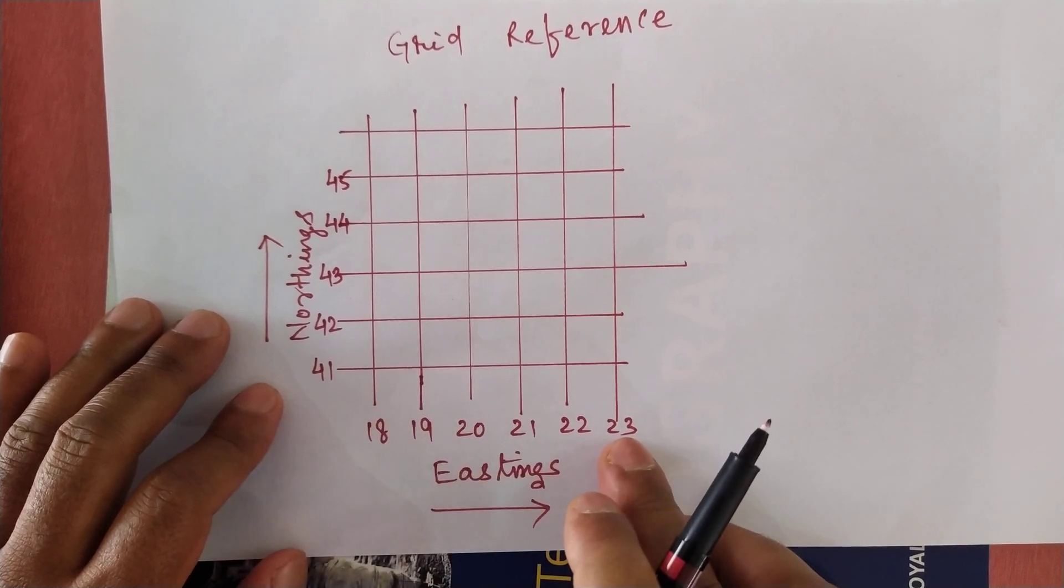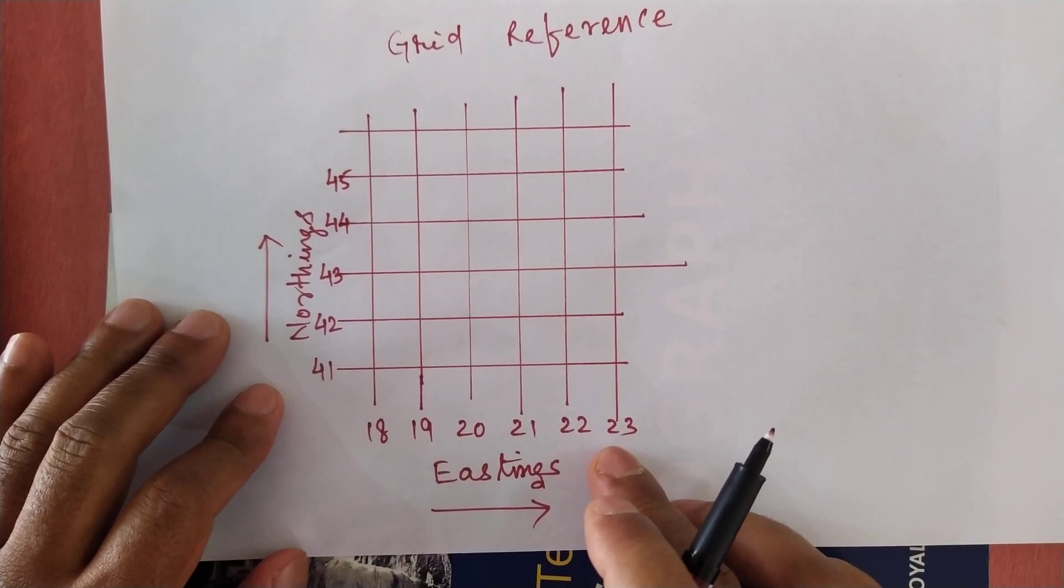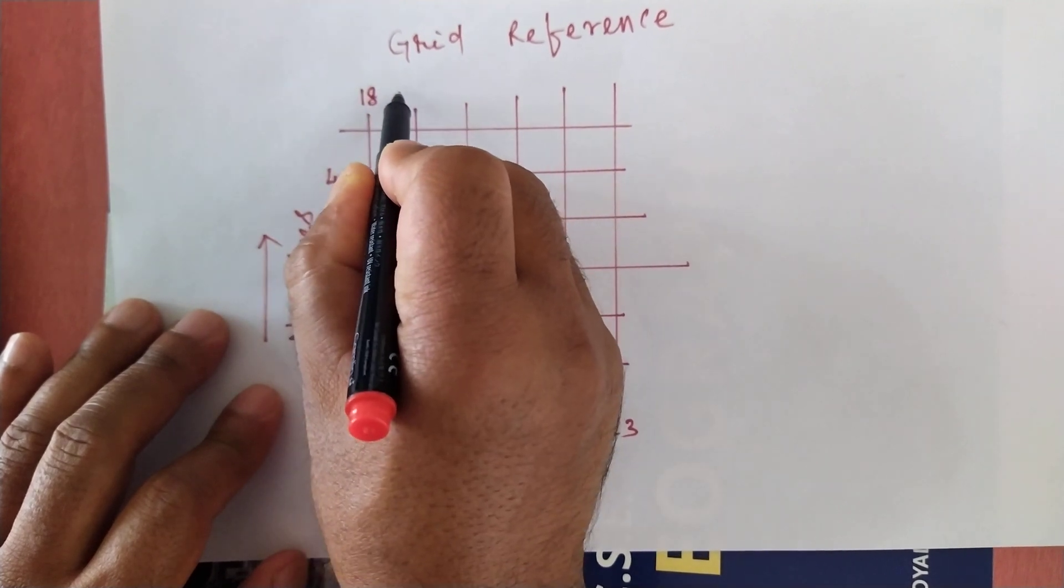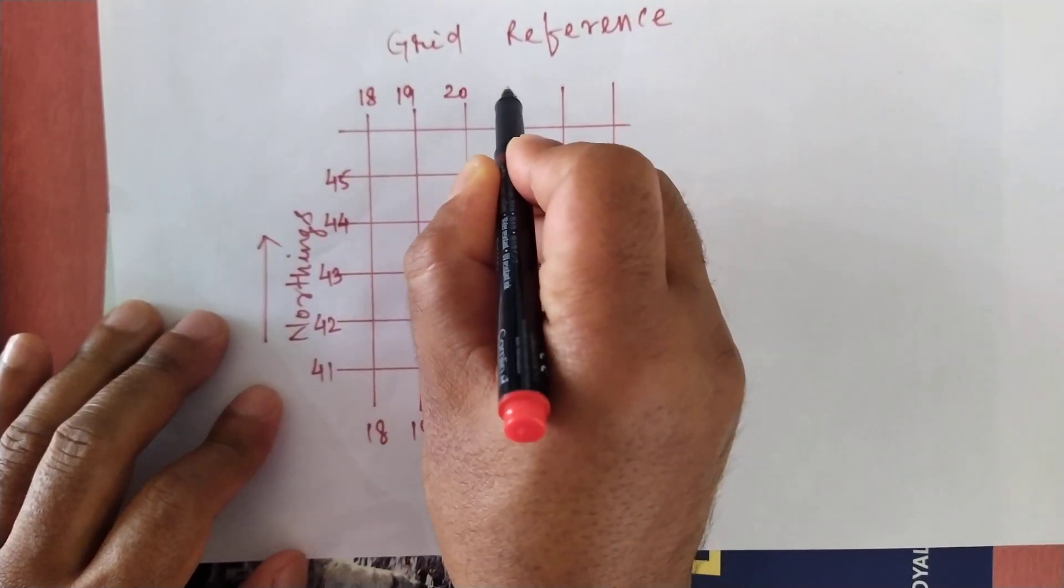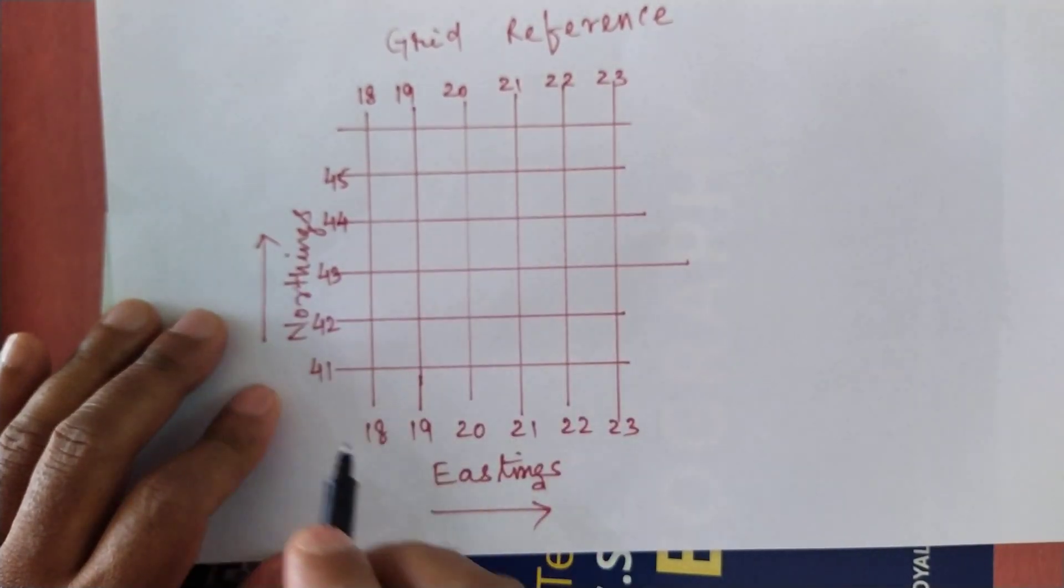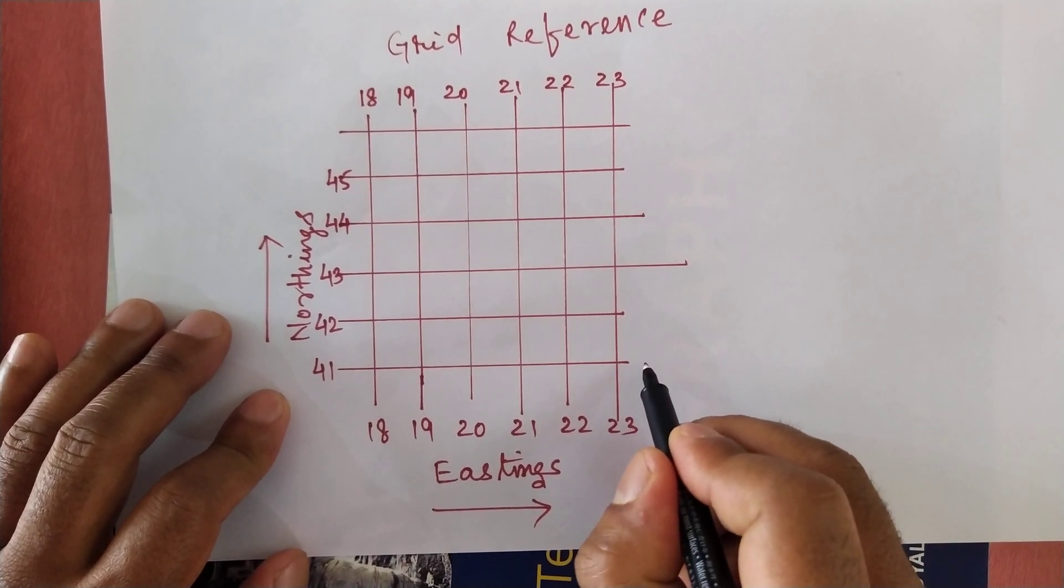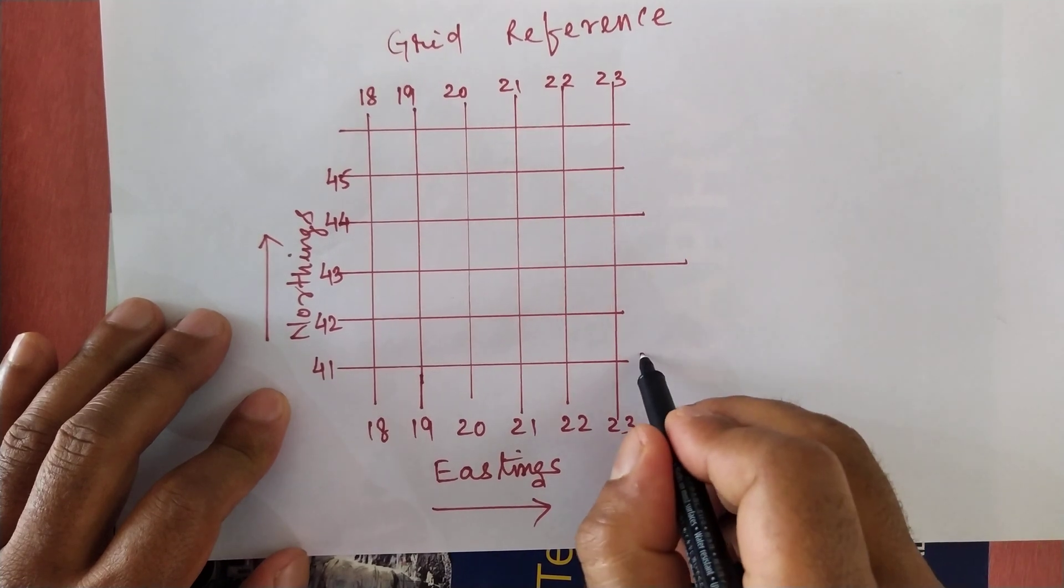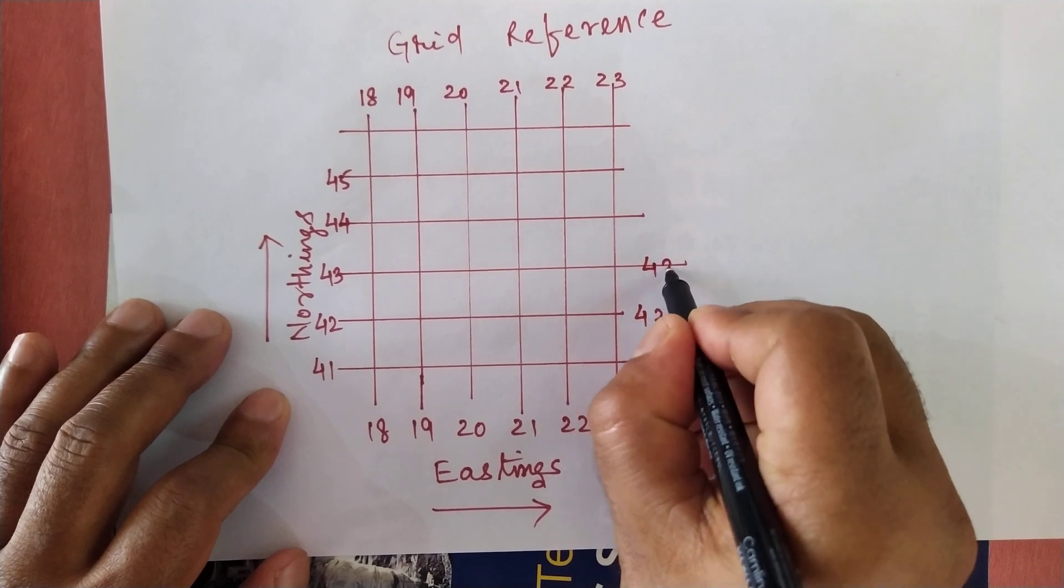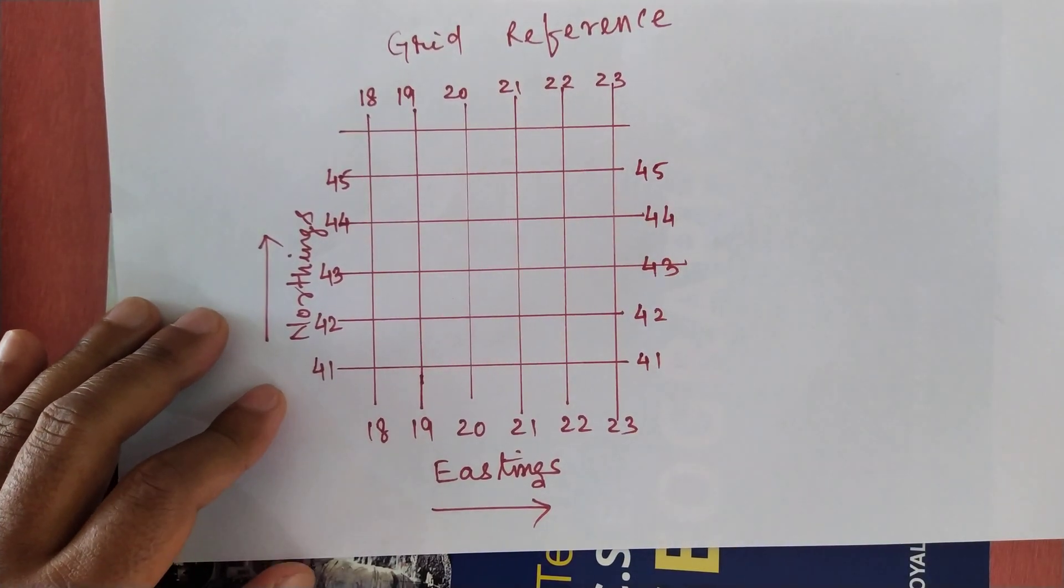The numbers can be mentioned on both sides, like the bottom side of the Eastings and top side of the Eastings as well: 18, 19, 20, 21, 22, 23. Likewise, the Northings numbers also will be written on both sides on the top of sheet: 41, 42, 43, 44, 45.